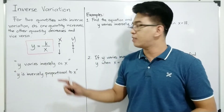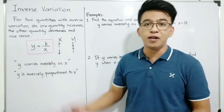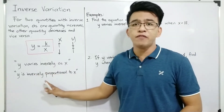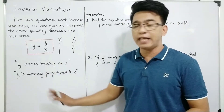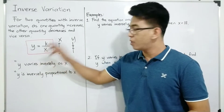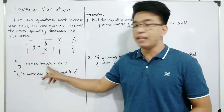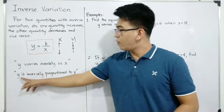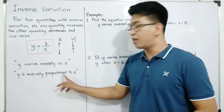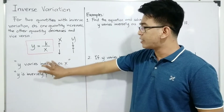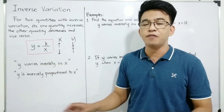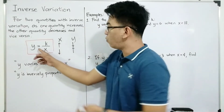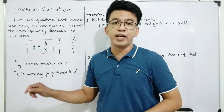Y is equal to k over x, wherein k is the constant of variation. We have here two different statements that can be translated into this kind of equation: 'y varies inversely as x' and 'y is inversely proportional to x.' These two statements are examples of inverse variation.